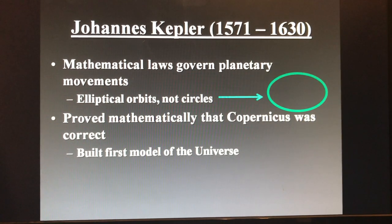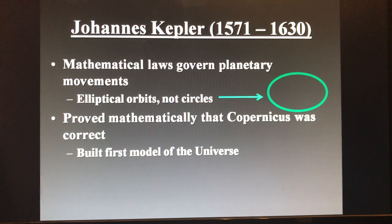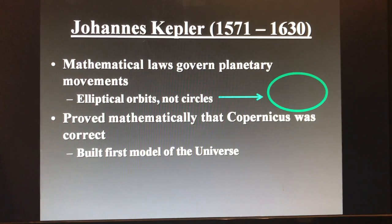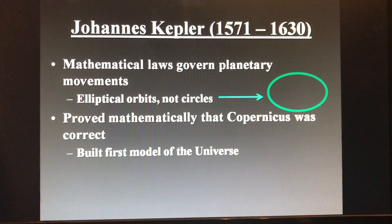Next is Johann Kepler, working in the late 1500s into the early 1600s. He was able to use math and its various principles to come up with mathematical laws that govern planetary movements. He put it into language that regular people could understand. Importantly, he figured out that planets travel in elliptical orbits — not full circles, but oval shapes. He was able to prove Copernicus right and provide the mathematical explanation for how and why the heliocentric theory made sense.